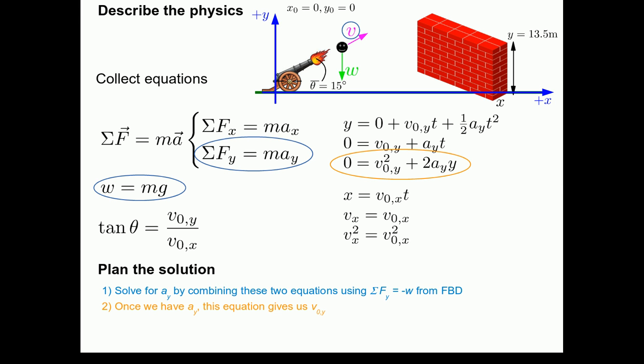Once we have a_y, this equation here gives us the initial y component of the velocity. We already know y. Step one gave us a_y. And so we know everything in this equation except for v0y. Once we have v0y, since we know theta, we can use this relationship to solve for v0x.